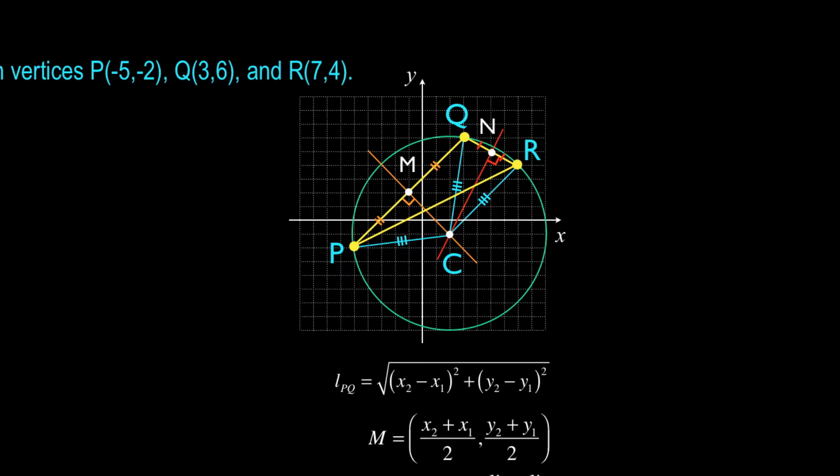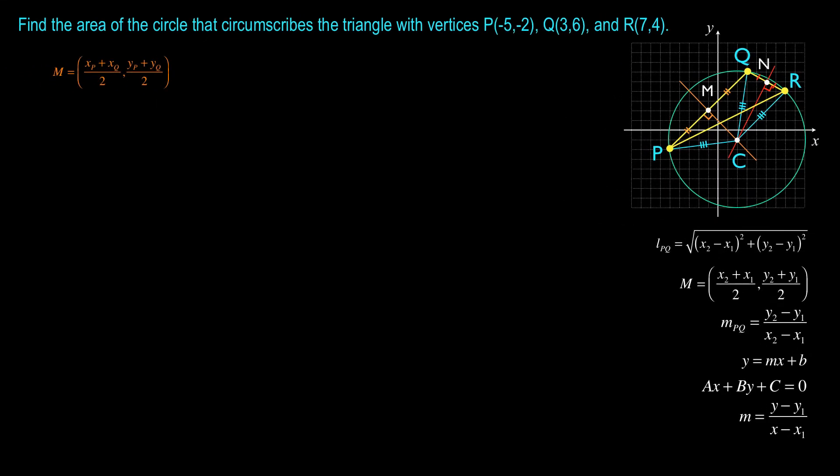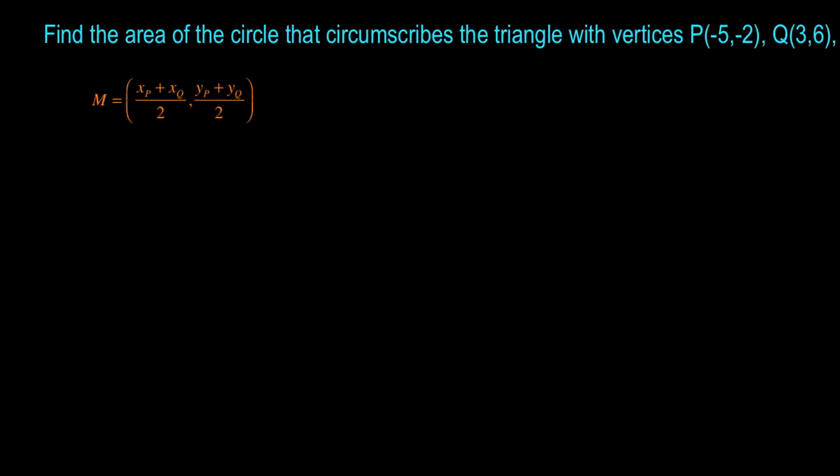Starting with the coordinates of M, I recognize it is the midpoint of line segment PQ. So I use my midpoint formula, which is just to say that I take the average of the x coordinates of P and Q and the average of the y coordinates of P and Q, and I get coordinates (-1, 2).